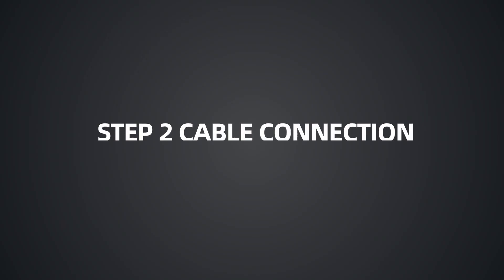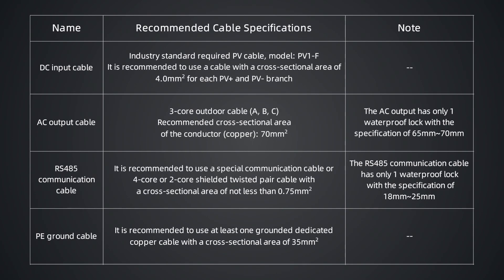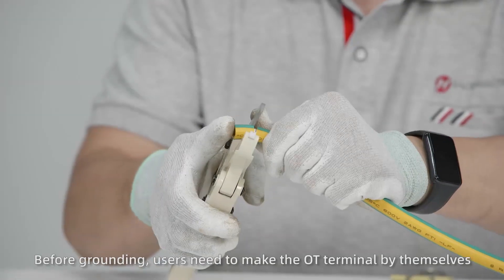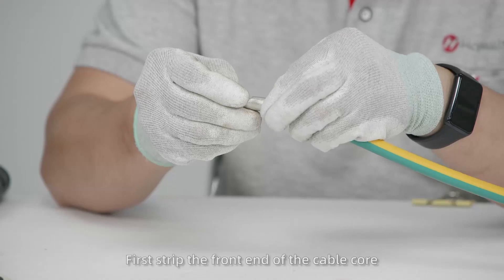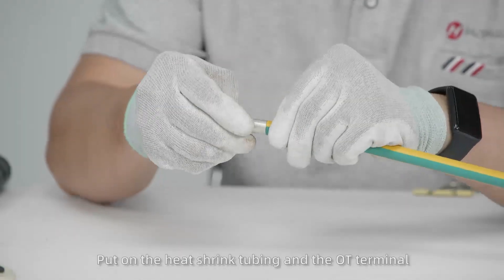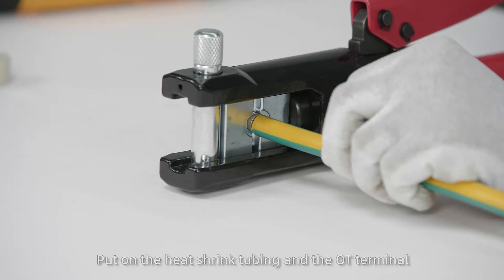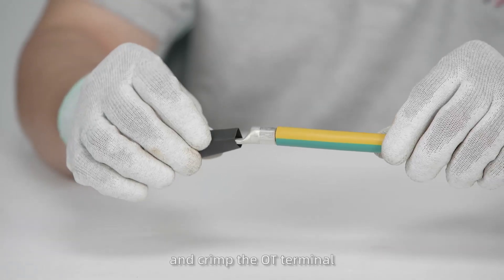Step 2: Cable Connection. First, connect the ground cable. Before grounding, users need to make the OT terminal by themselves. First strip the front end of the cable core. Put on the heat shrink tubing and the OT terminal, and crimp the OT terminal.